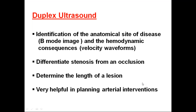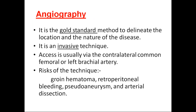Identification of the anatomical site of the disease and the hemodynamic consequences — differential stenosis from an occlusion, determining the length of the lesion — is very helpful in planning arterial interventions. Angiography is the gold standard method to delineate the location and the nature of the disease.